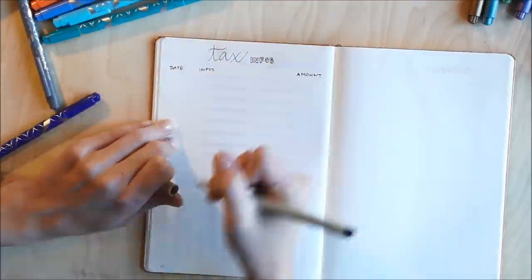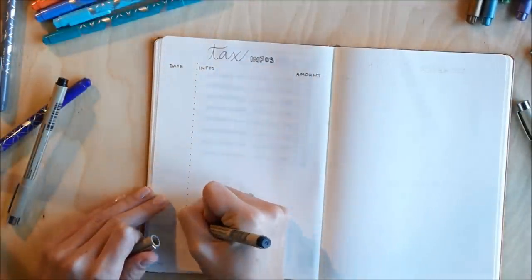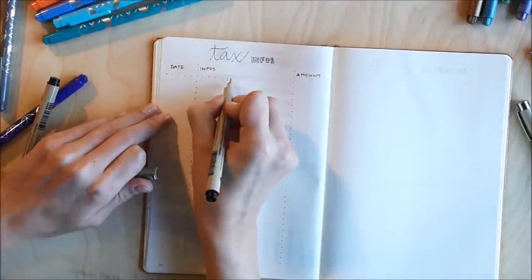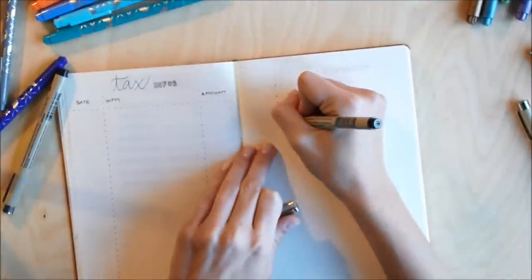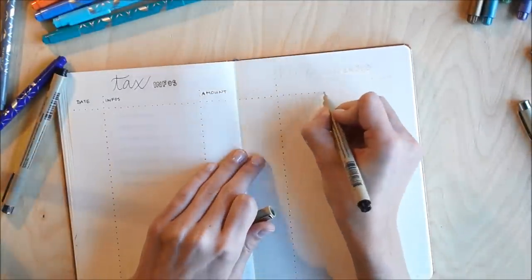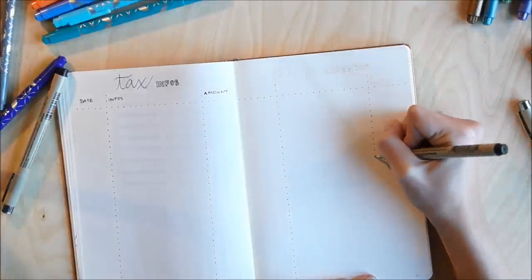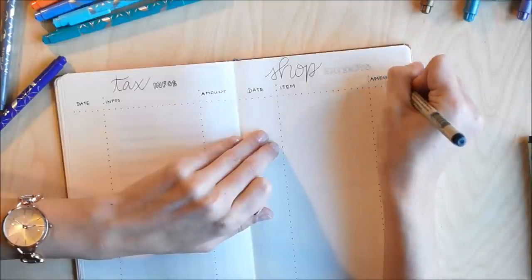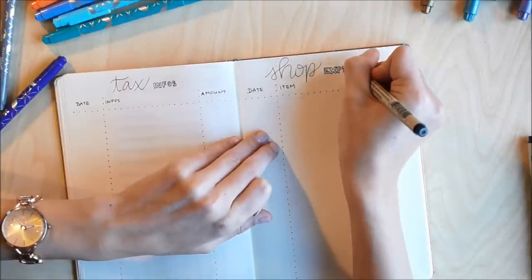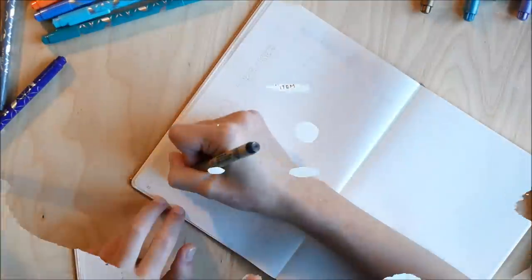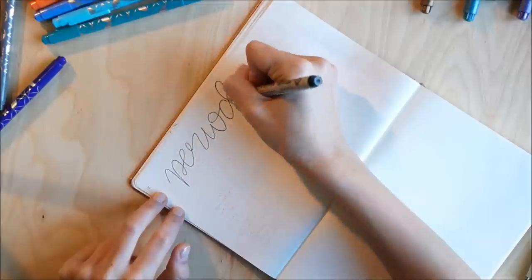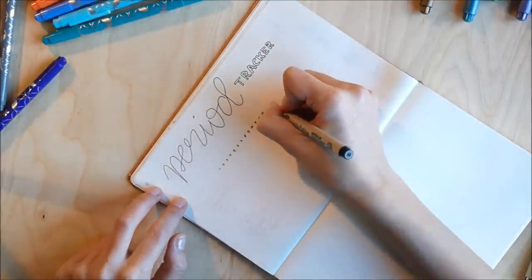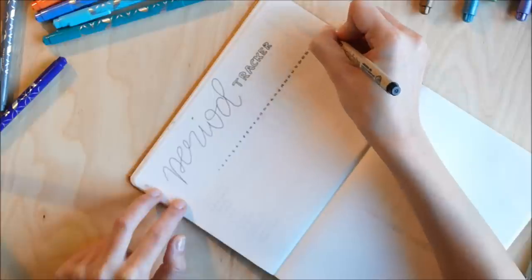Next up I wanted a page for tax info like for stuff that I bought for work or for my training program which I will need for my tax form next year. And on the right side I wanted to have a page for my shop expenses where I write down all the supplies that I ordered and when I ordered and how much they were. And because I ordered supplies in bulk this page should be enough for the whole year.